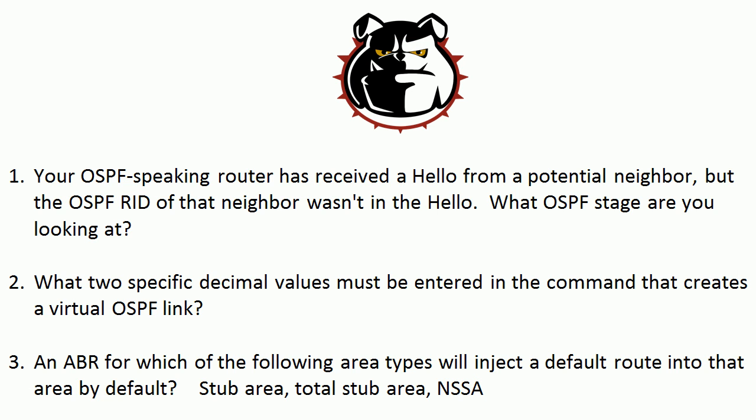For this first question, this is actually normal — it just happens so fast that we usually don't even see it. This is the init stage. All it is, is your router has gotten a hello from a potential neighbor but the RID wasn't in the hello. We need to see hellos with the OSPF RID of that neighbor coming in to really get the adjacency started. But the initial stage, as you would expect, is called init.